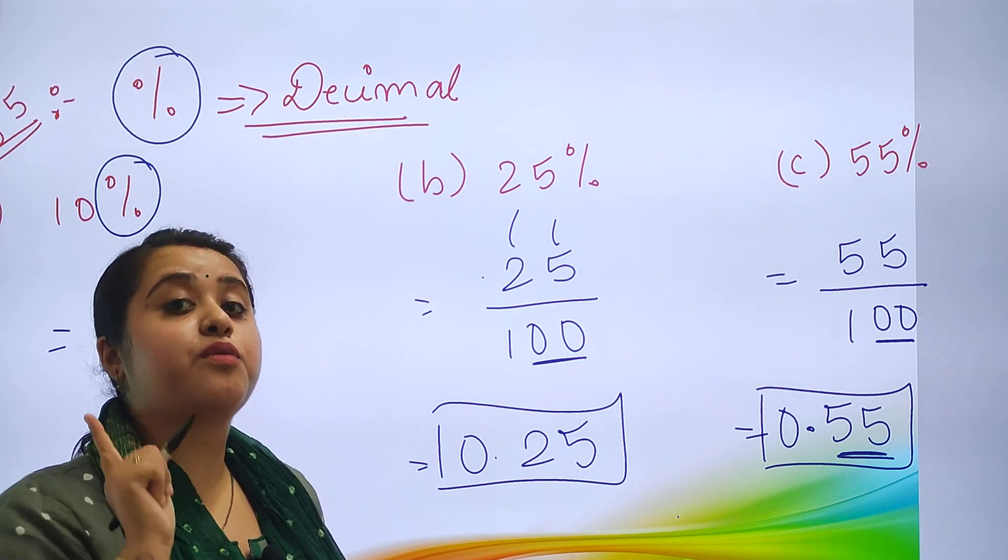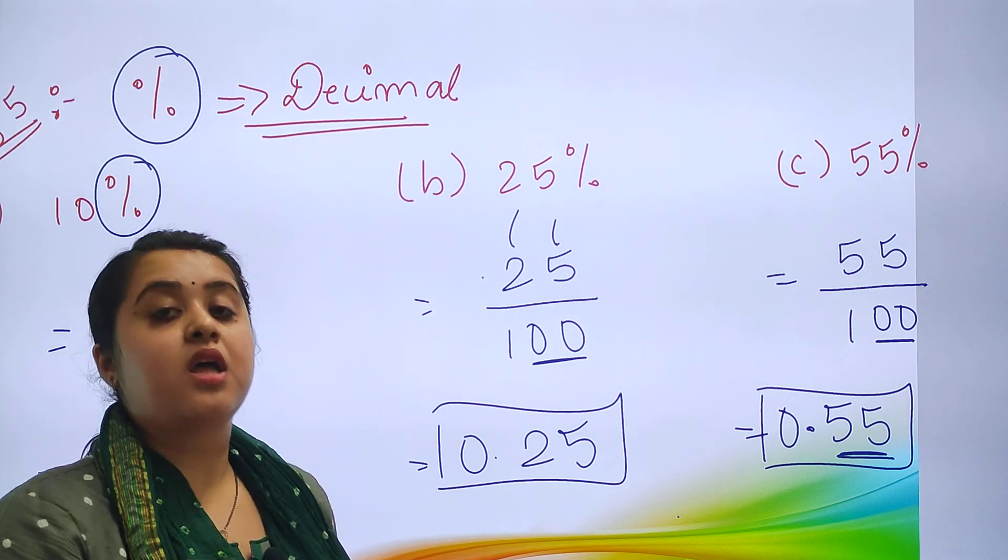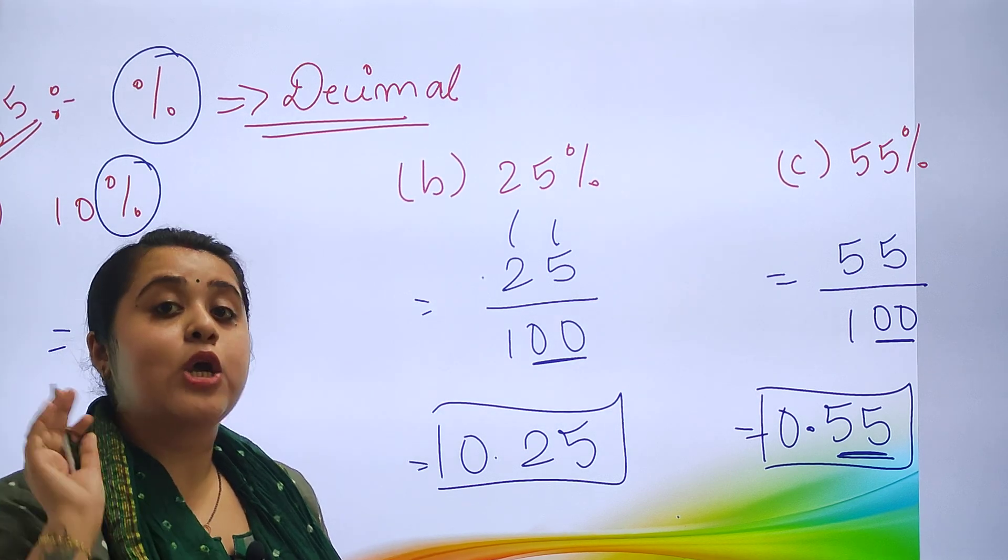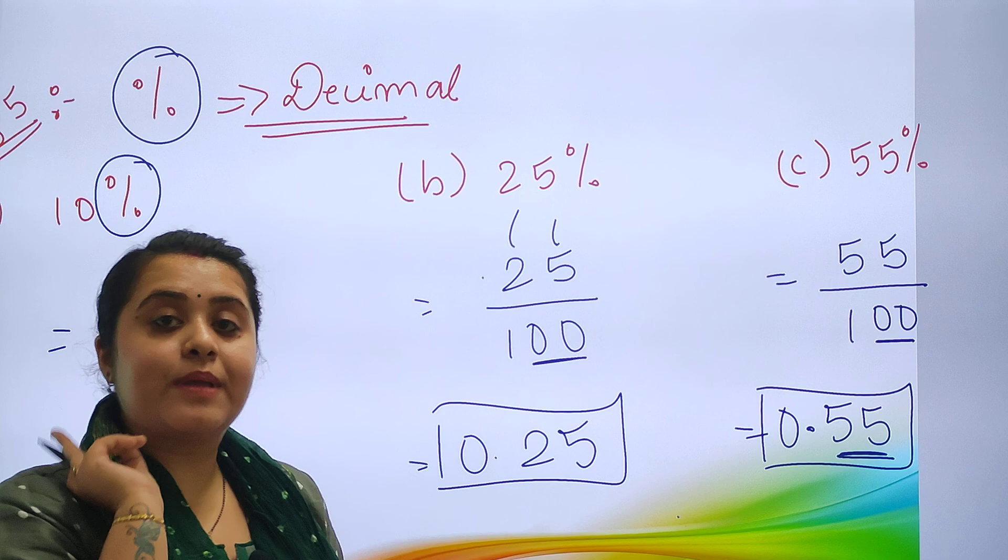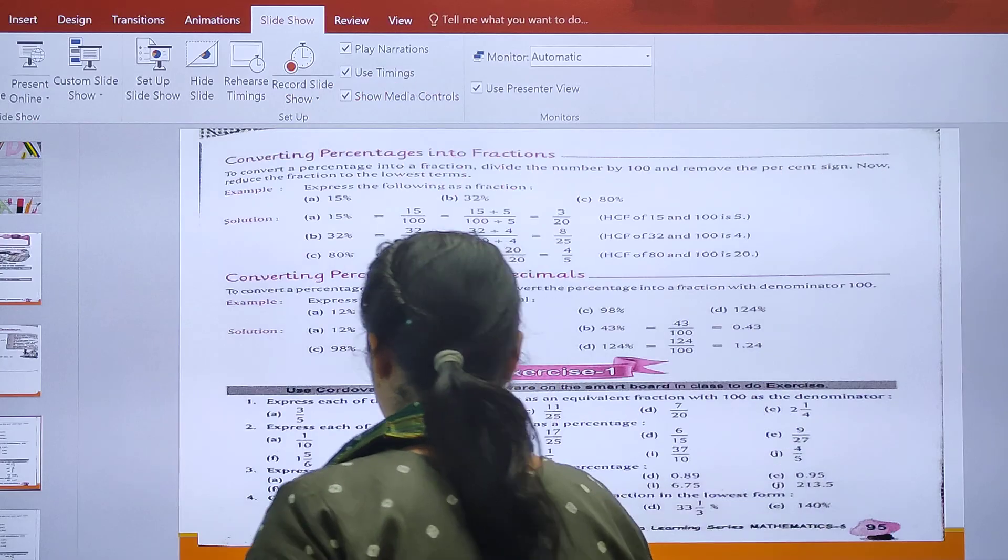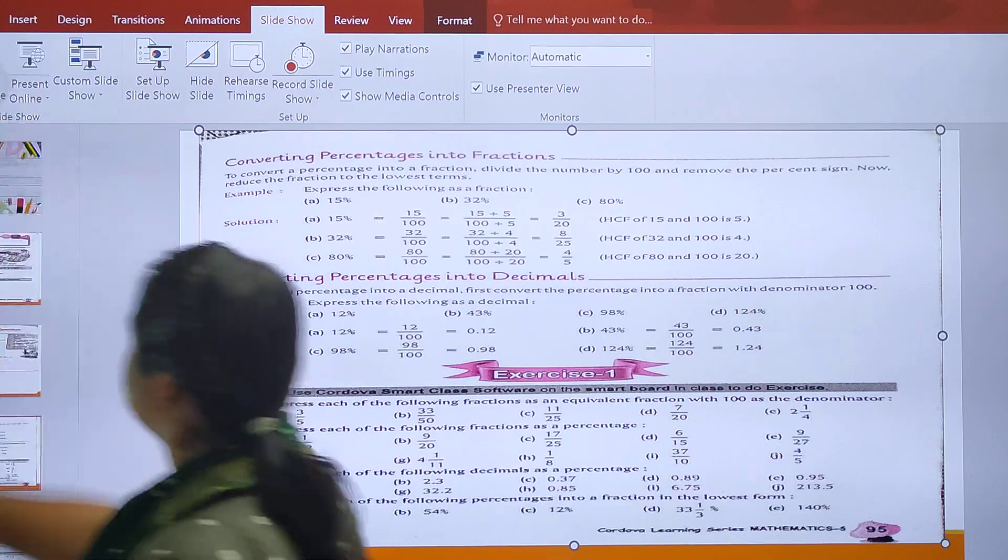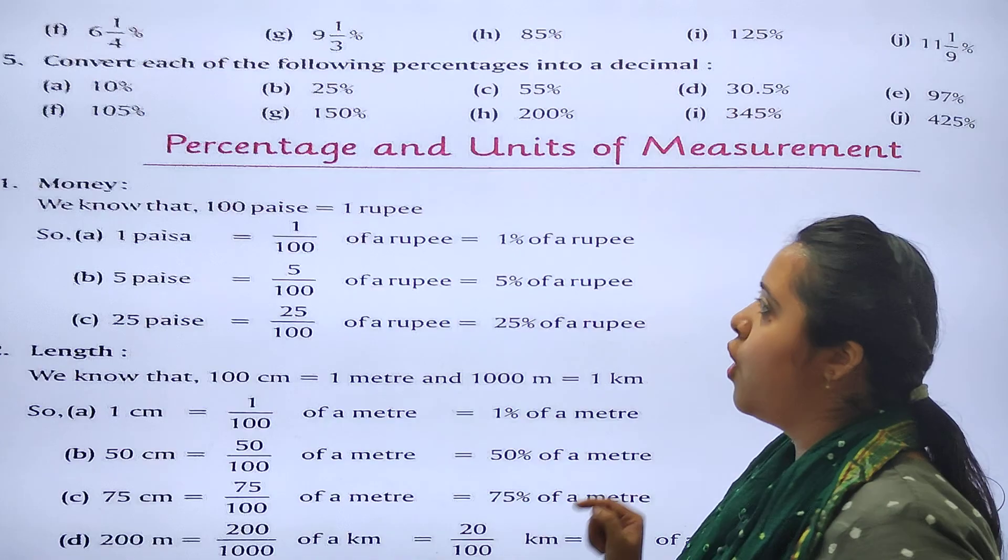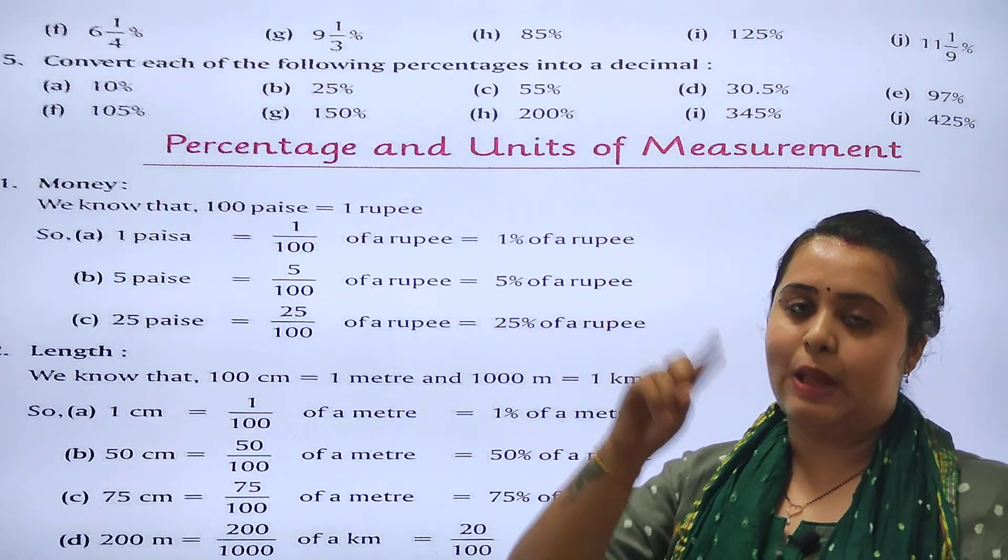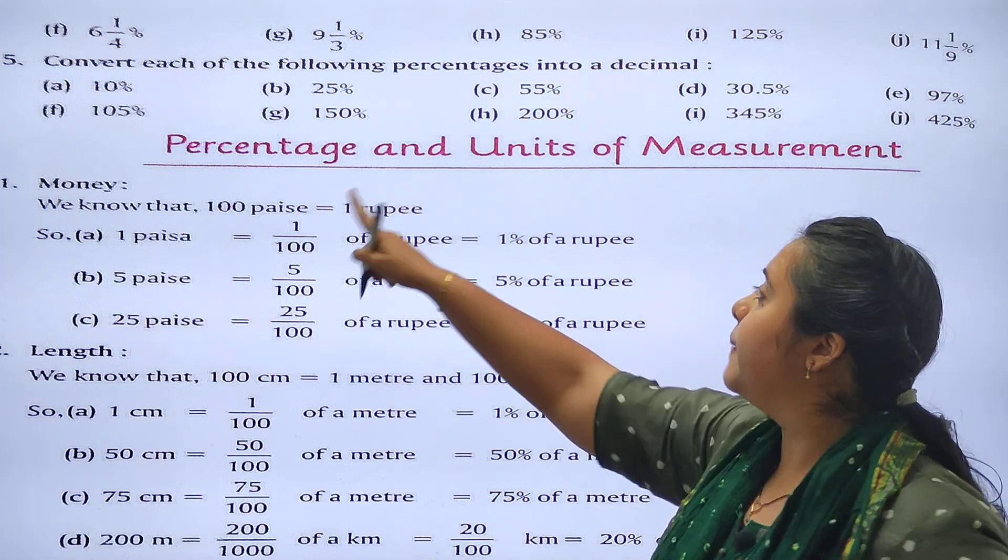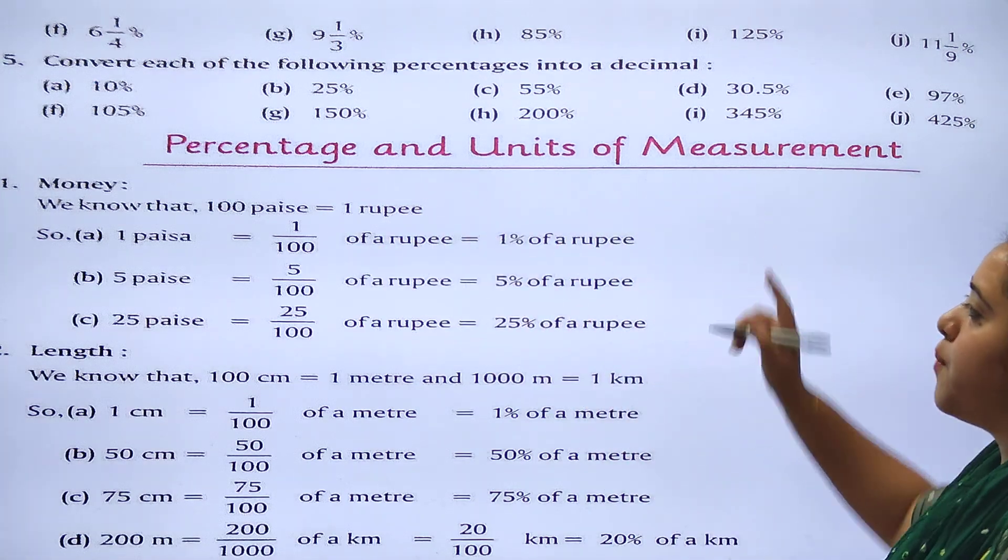So students, you are supposed to solve the remaining zeros in your notebook. And if you have any doubt, you are free to ask in the live classes. We will be discussing each sum in the live classes. So here we have completed our question number 1, 2, 3, 4 and 5 of exercise number 1. Now the next topic comes, that is percentage and units of measurement.